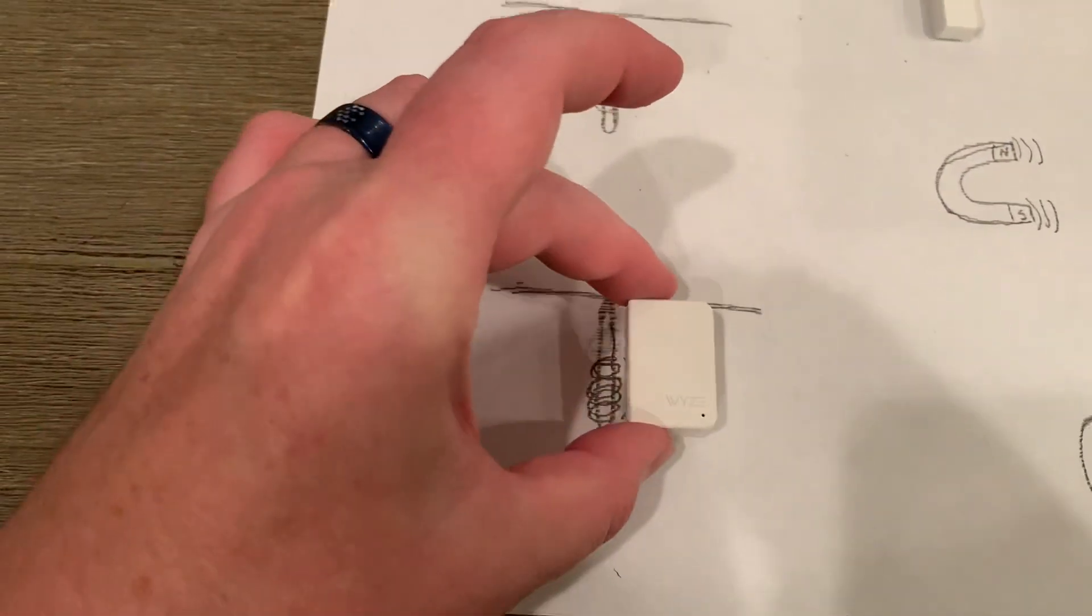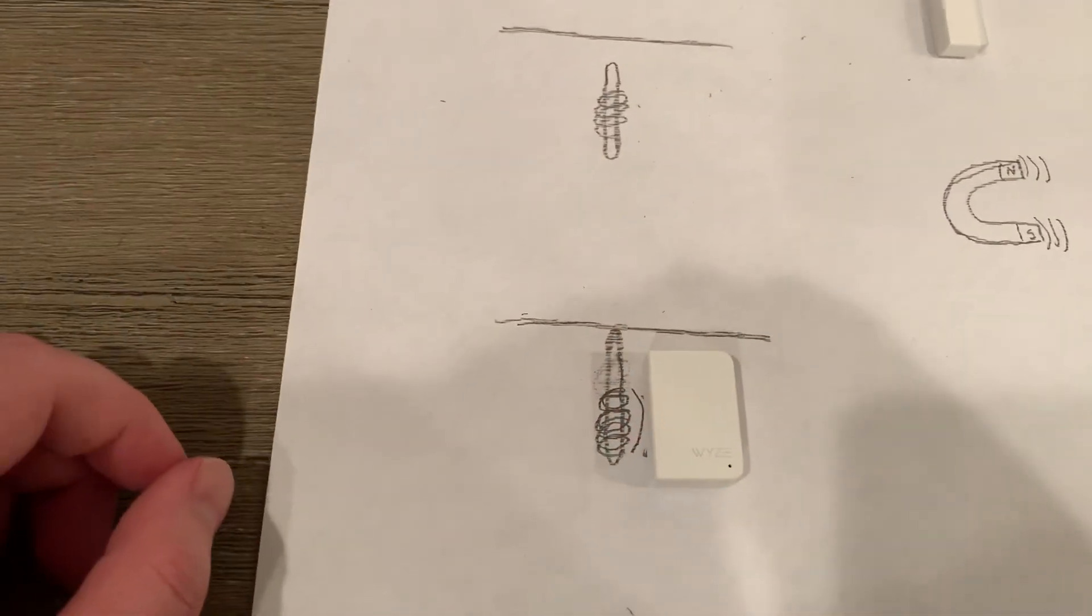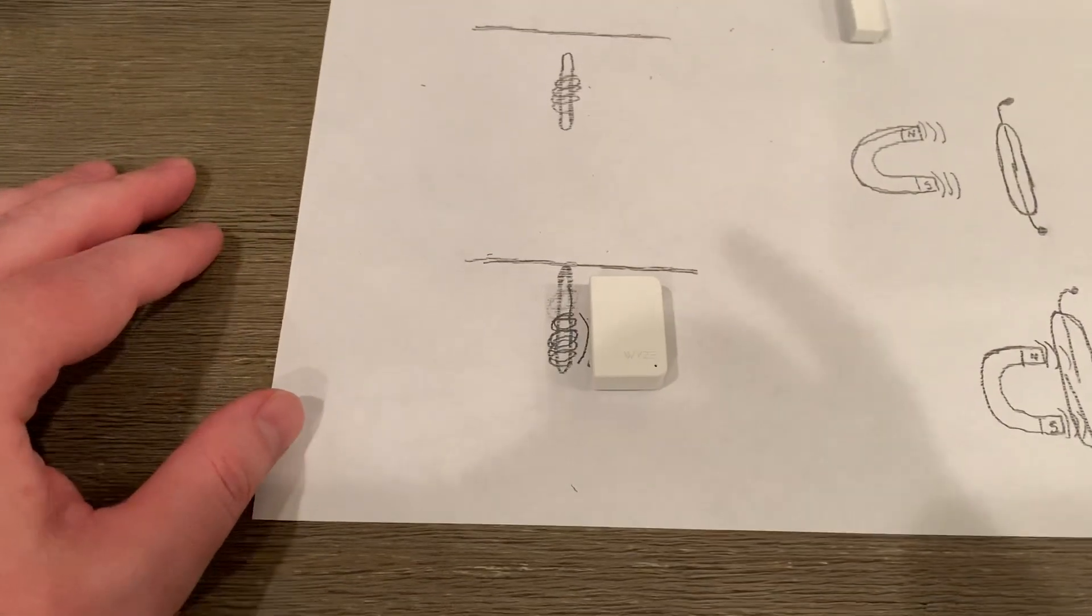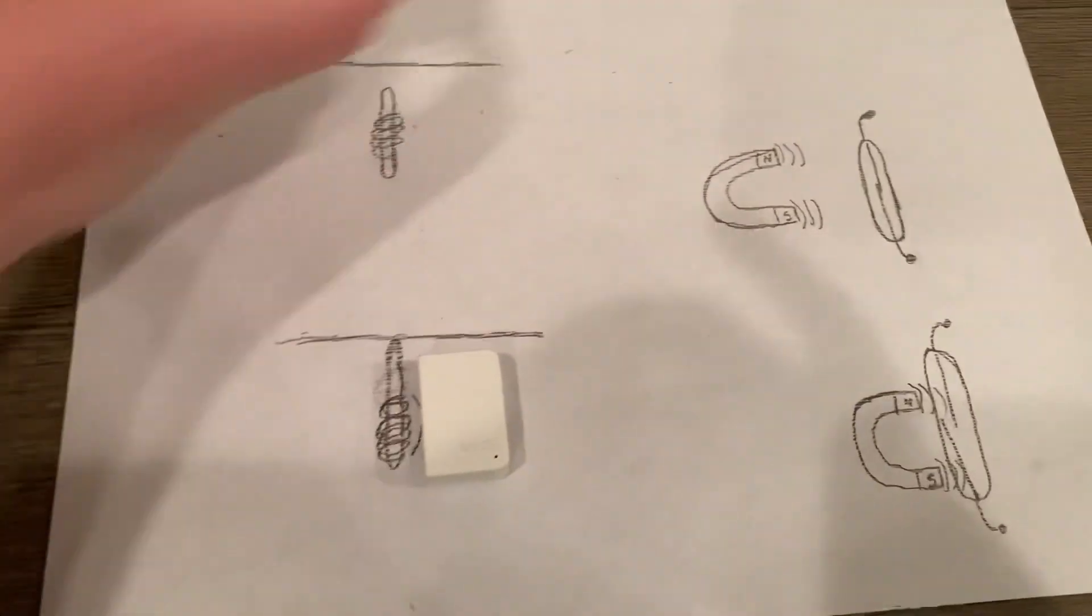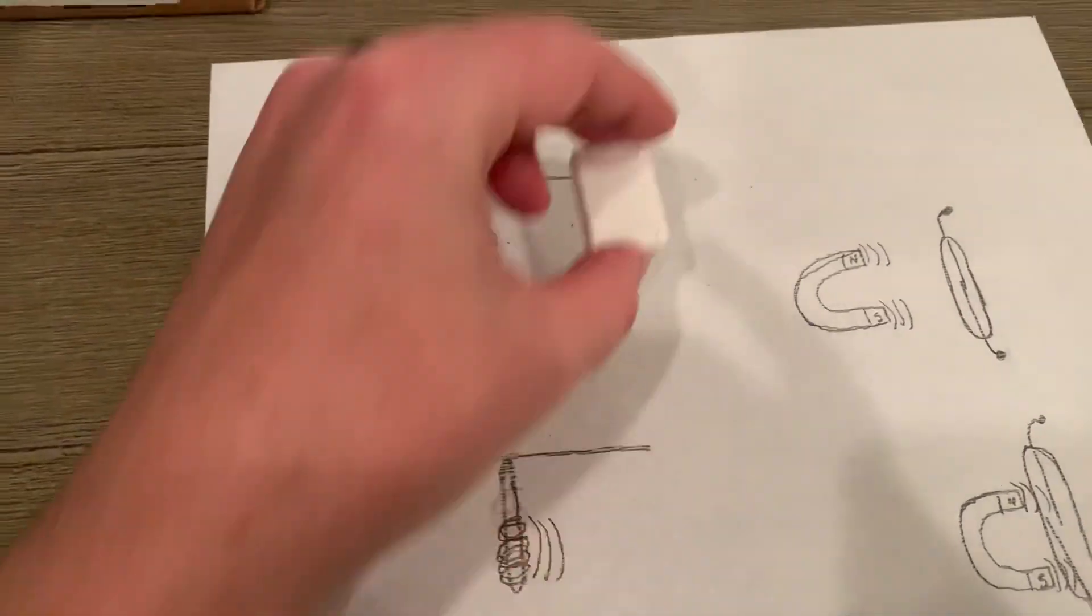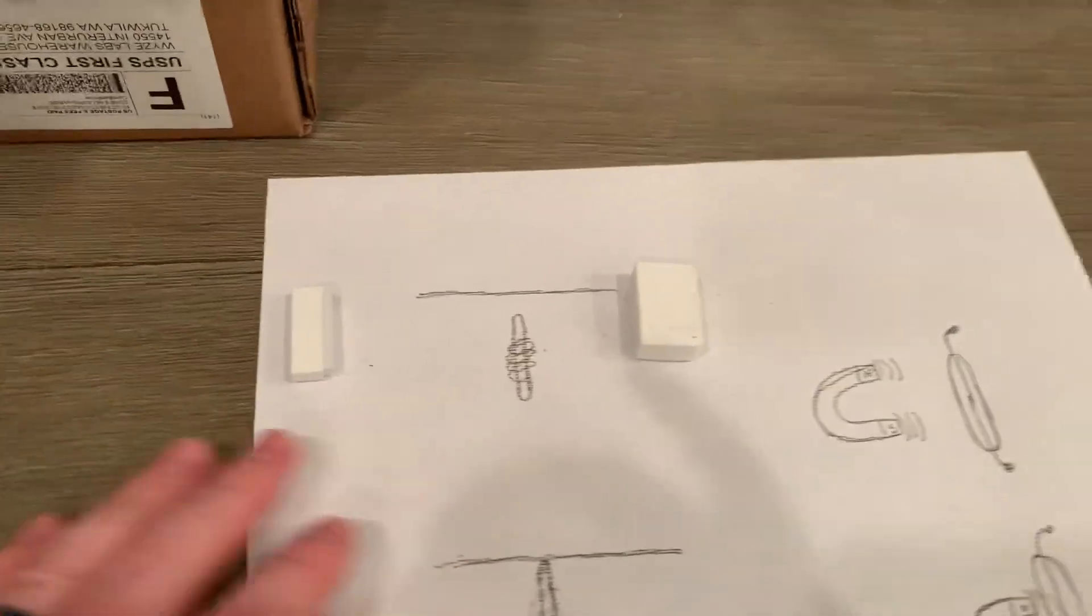By placing your Wyze sensor close enough and in the right orientation to that chime, it will trigger your sensor. You can set that up in the app to say that it's the doorbell and everything will be fine.